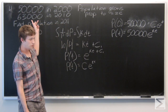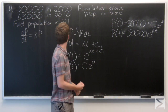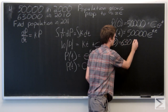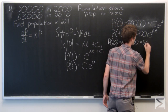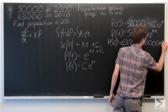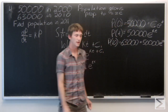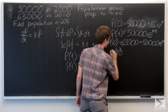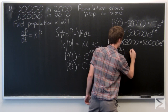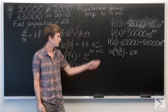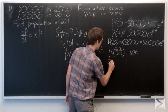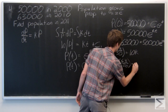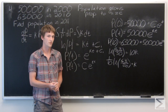We have one more initial condition: in the year 2010, which is t equals 10, our population is 63,000. Plugging in, we get 63,000 equals 50,000 e to the 10k. Solving for k, we get that the natural log of 63 over 50 equals 10k, so k equals one-tenth of the natural log of 63 over 50.